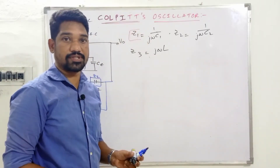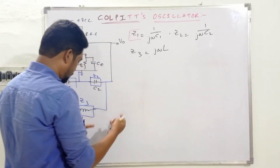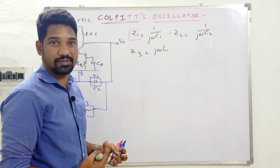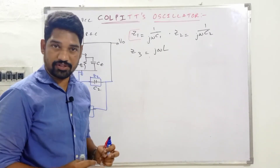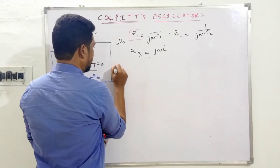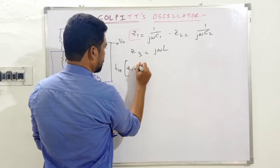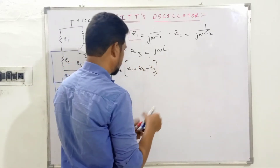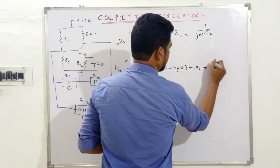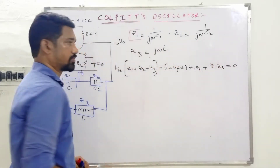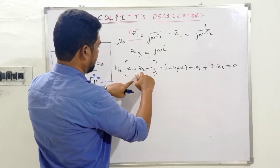What is the general expression? Remember, this is already derived in the previous video — it is recommended not to start from scratch here. The general expression for LC oscillators is: HIE × (Z1 + Z2 + Z3) + (1 + HFE) × (Z1·Z2 + Z1·Z3) = 0. Please go through the previous video on this. Now we substitute the values of Z1, Z2, and Z3.